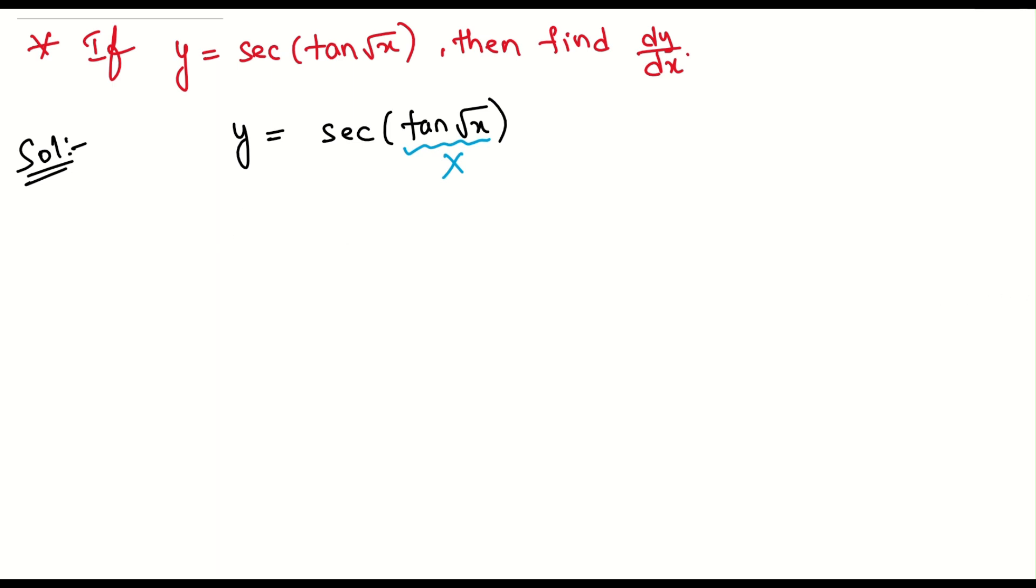So what is this? This is simply what is the derivative of secant x? If we check this, the derivative of secant x will be secant x into tan x. So I will be applying the same formula here.